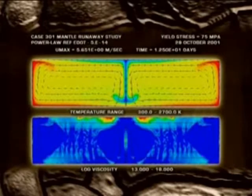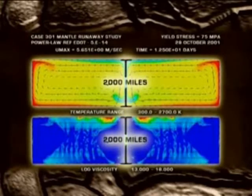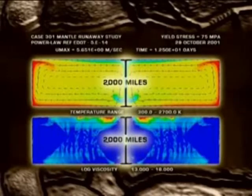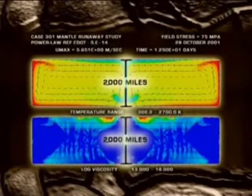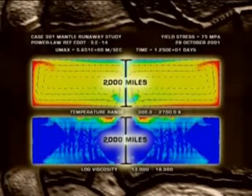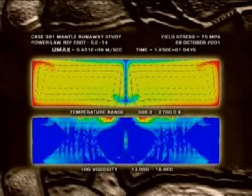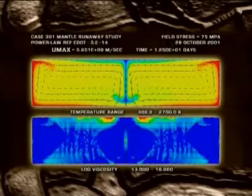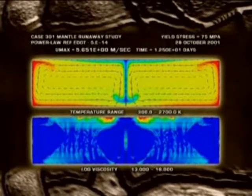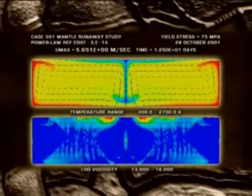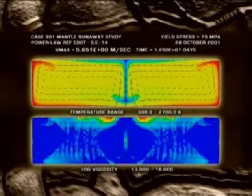The height of the box is about 2,000 miles. So it corresponds, I've chosen the parameters in this calculation to represent the Earth's mantle. And the velocity, denoted by Umax there in this panel, is like five and a half meters per second. That's many miles per hour. I think that's about 10 to 15 miles per hour. This material is sinking.